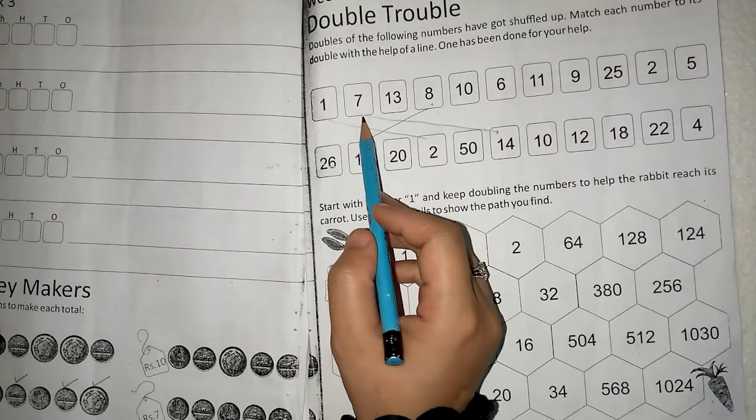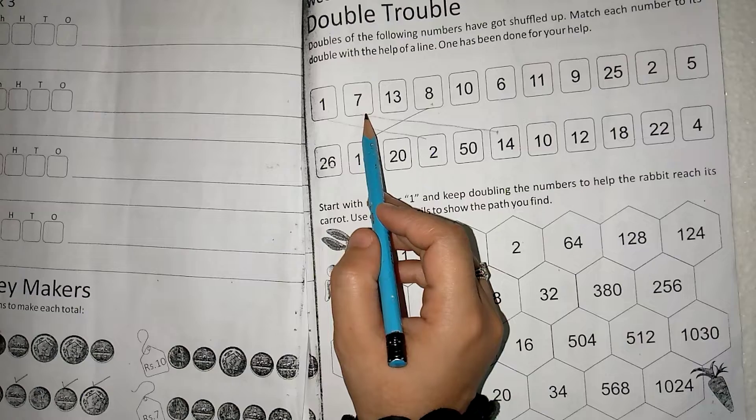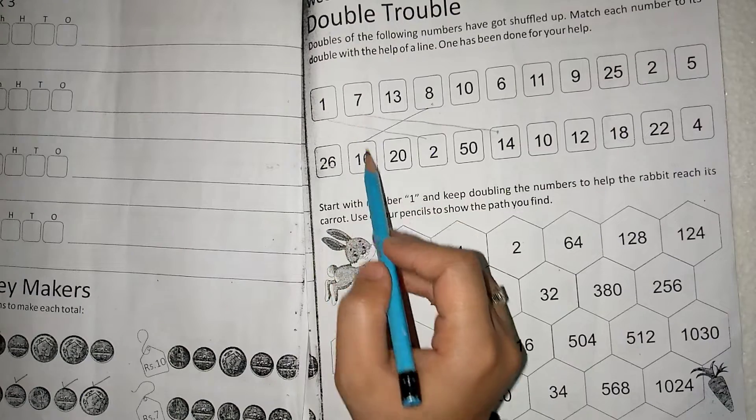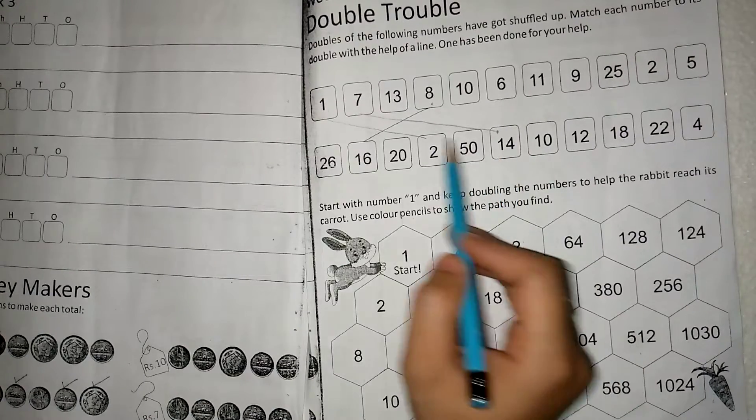In this way, seven double means seven plus seven, so you have to find out 14. In the second row, you will find out 14 and get it with seven.